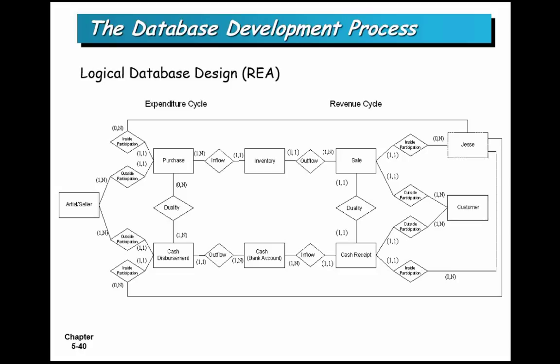Start off with one, two, three, four, five, six, seven, eight, nine. That's a good starting point, nine. Each box is an entity. Every entity gets a table. So we'll start off with nine.